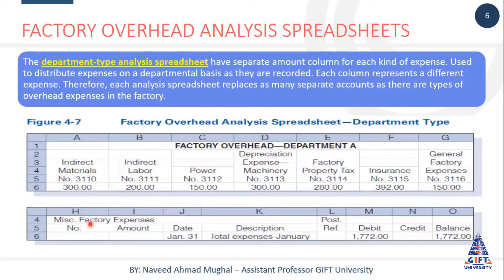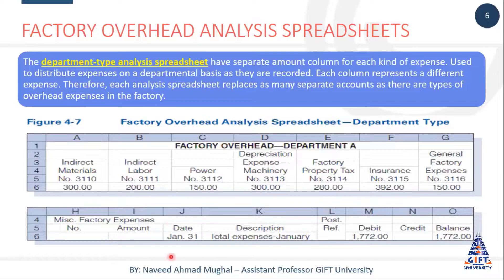Jabhi bhi hume yeh miscellaneous factory expense ka bil aya, aur hum log ne isko record kar liya. Ab iski recording ke baad hum ne iski distribution karni hai among the departments. Toh iski distribution karke hum log phir iski department wise sheet banayenge. Toh yahan peh hum log iske different departments mein bhi charge kar sakte hain - pichhe iske columns bana dete hain. Aur phir hum log factory overhead ke department ki sheet bana dete hain.